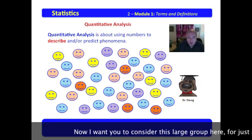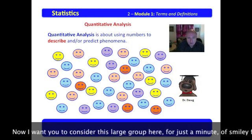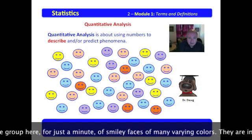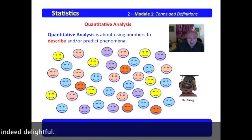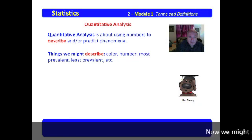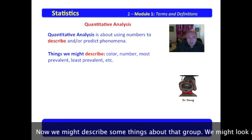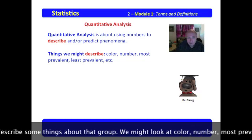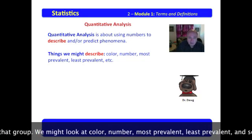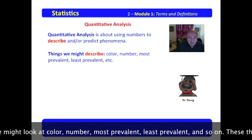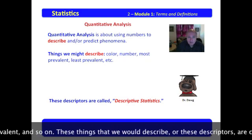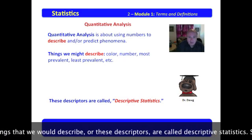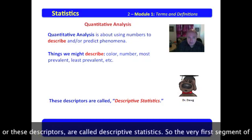Consider this large group of smiley faces of many varying colors — they are indeed delightful. We might describe some things about that group: we might look at color, number, what's most prevalent, least prevalent, and so on. These descriptors are called descriptive statistics.